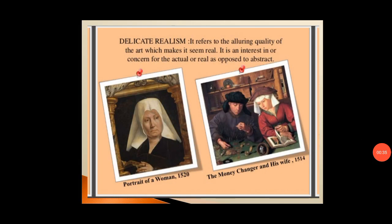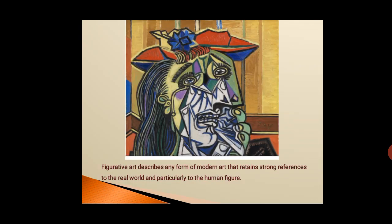The second expression is delicate realism. Delicate realism refers to the alluring quality of art which makes it seem real — it is an interest in or concern for the actual or real as opposed to the abstract. Next is figurative art, which describes any form of modern art that retains strong references to the real world and particularly to the human figure.